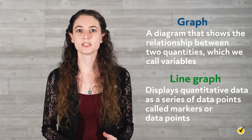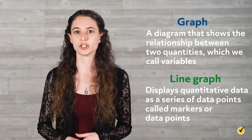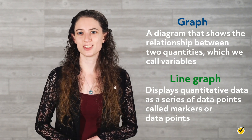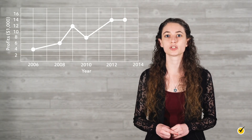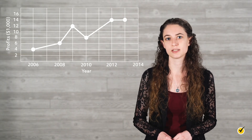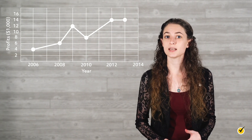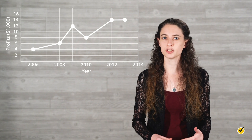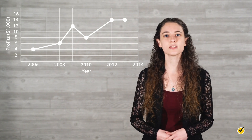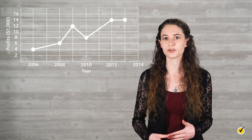A line graph is typically used to show information that changes over time. Let's take a look at an example. This line graph shows the change in a company's profits over several years. The x-axis is labeled year, and the y-axis is labeled profits. We see that line segments connect the data points plotted on the graph. Since the line segments are generally moving in a positive direction, we can say that the company's profits tended to increase from 2006 to 2013.